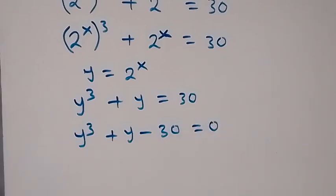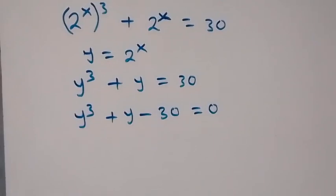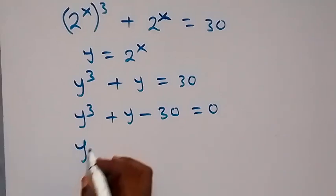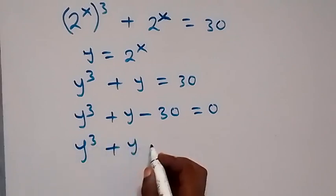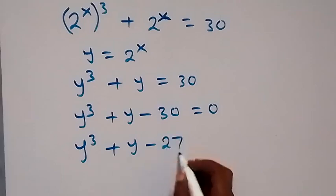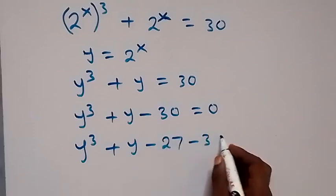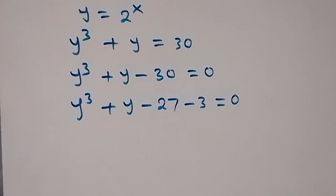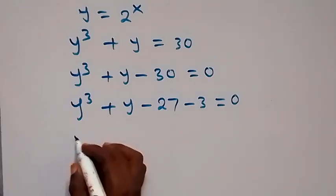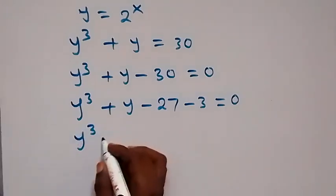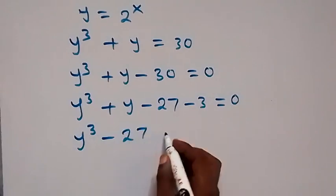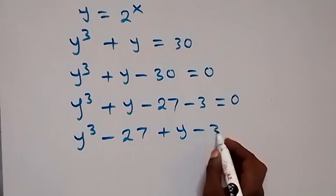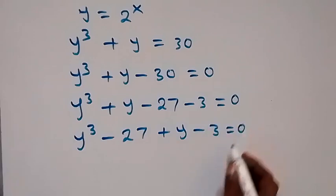From here we can write minus 30 as minus 27 minus 3, so this becomes y raised to power 3 plus y minus 27 minus 3 equals to 0. Then we group this together as y raised to power 3 minus 27, plus y minus 3, equals to 0.